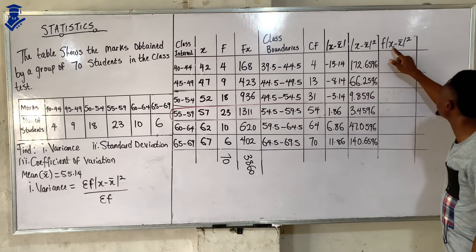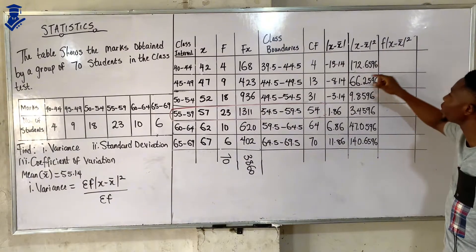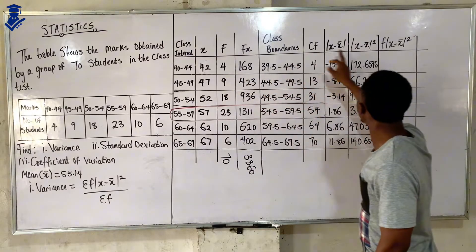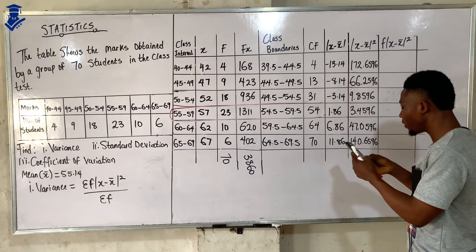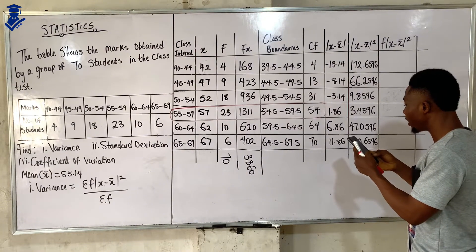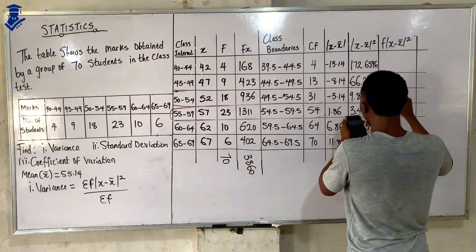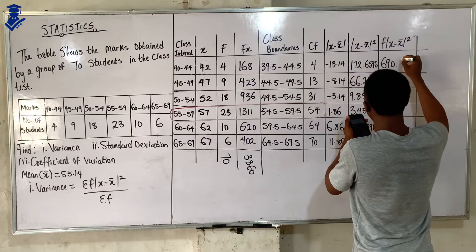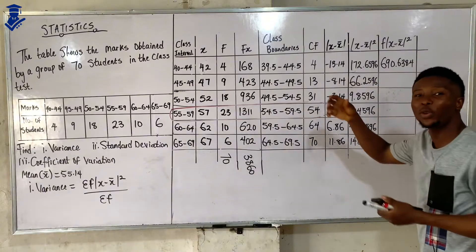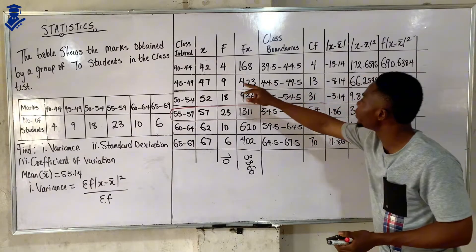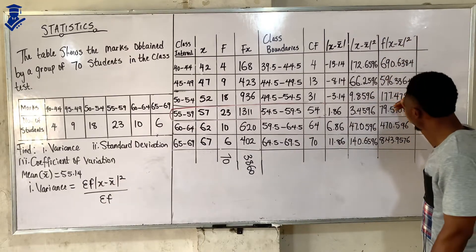Next, we find f times (x minus x-bar) squared — the product of frequency multiplied by (x minus x-bar) squared. Starting with the first row: 4 times 172.6596 gives us 690.6384. We repeat this same process for every row of data.